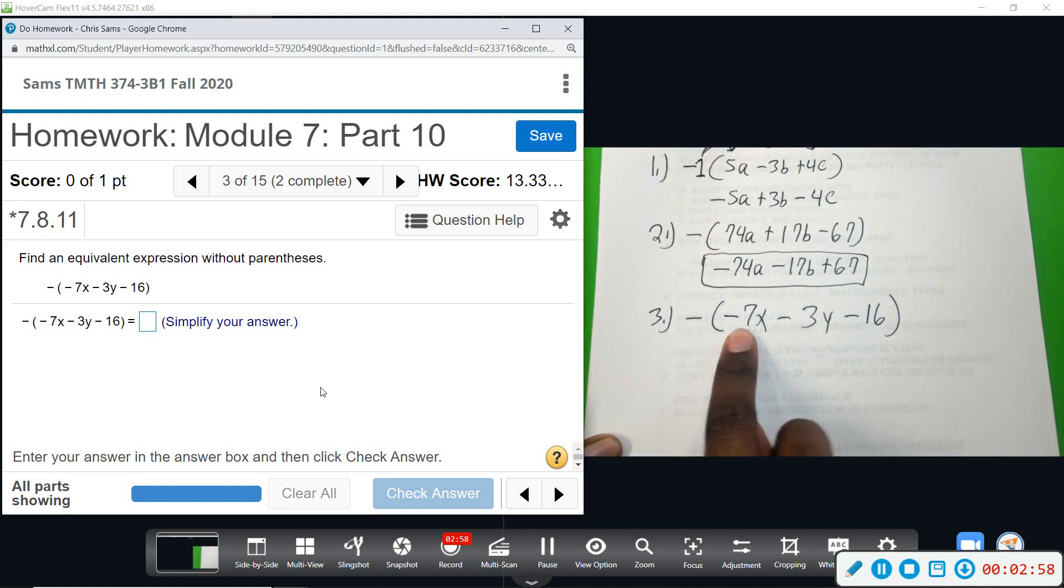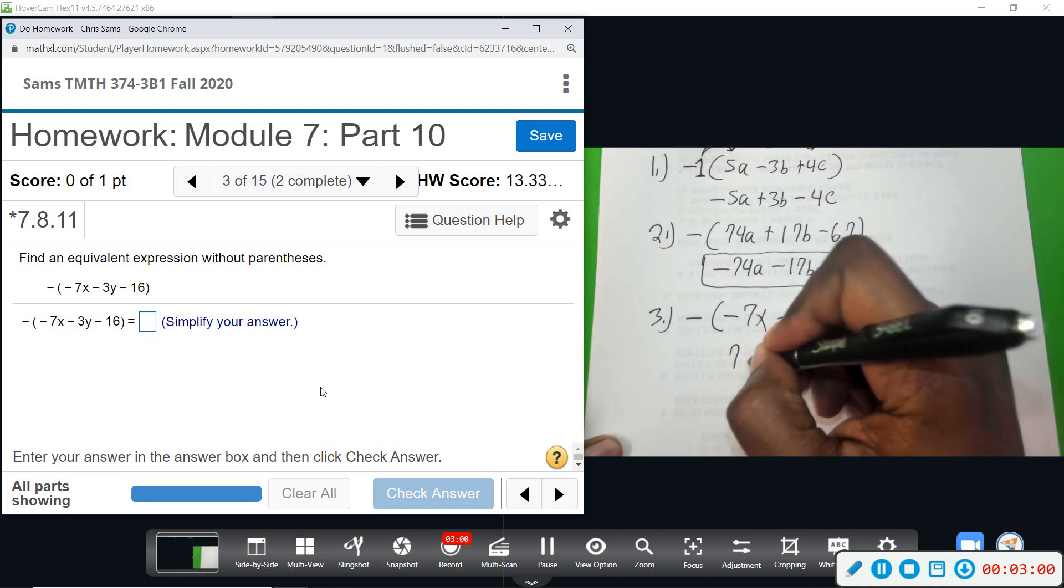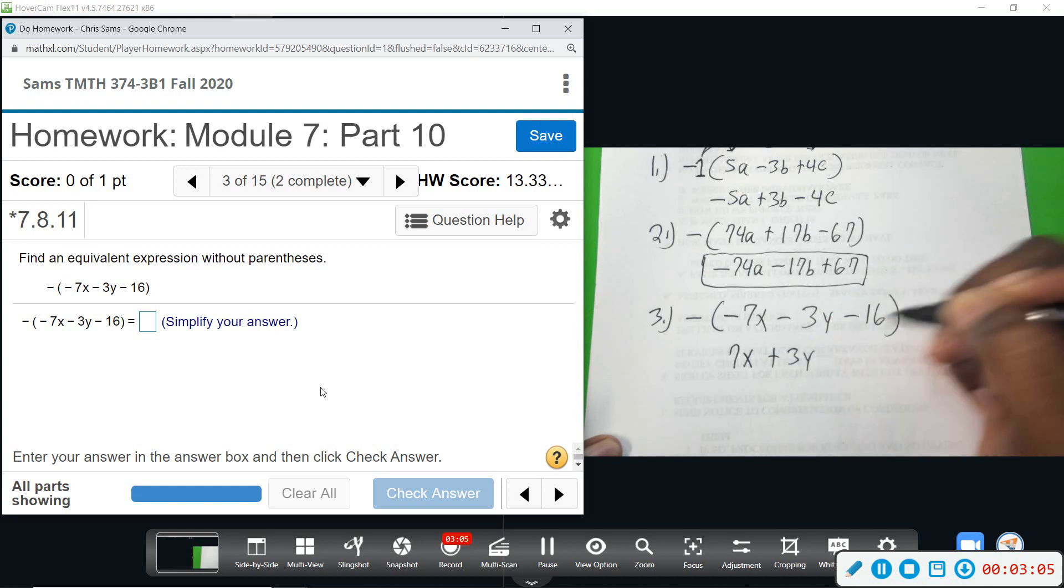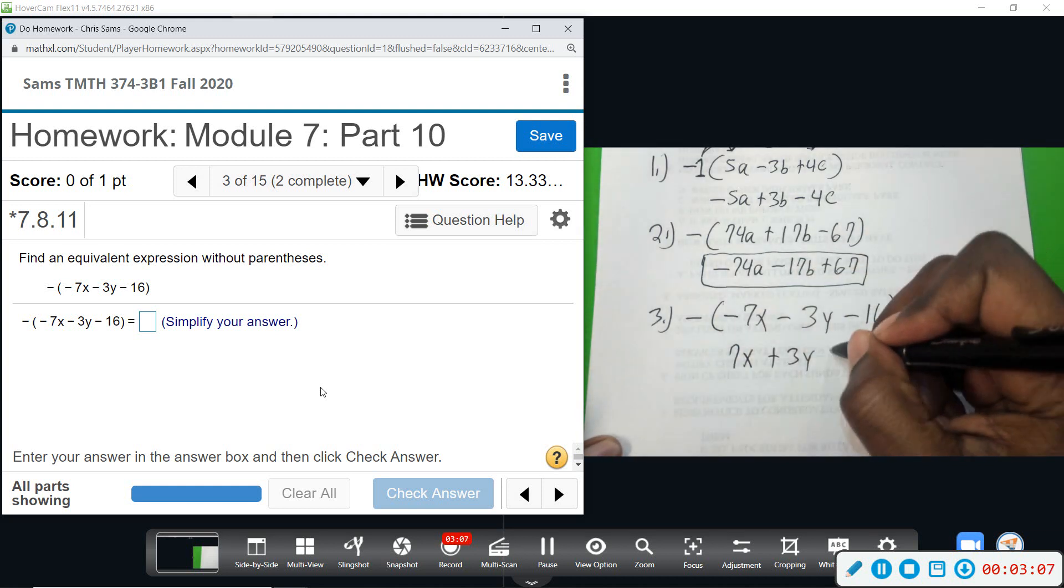We'll distribute, and that will give us a positive 7x, a positive 3y, and then a positive 16.